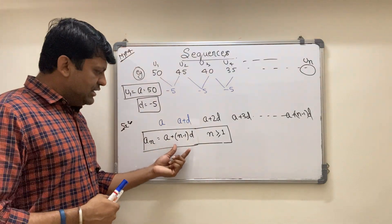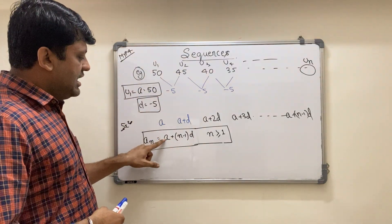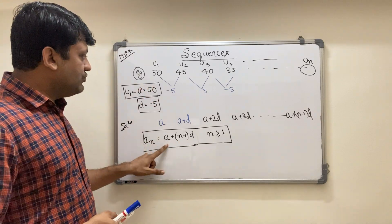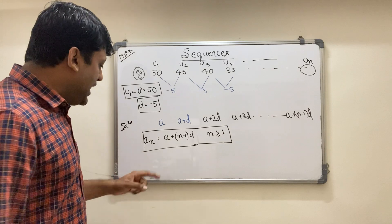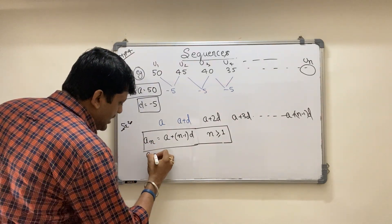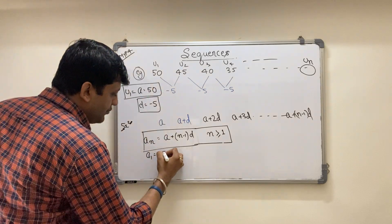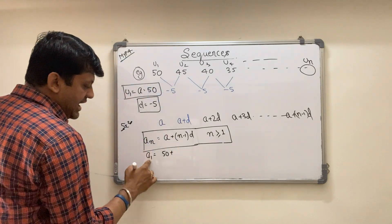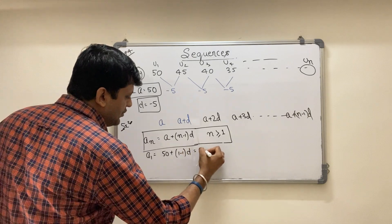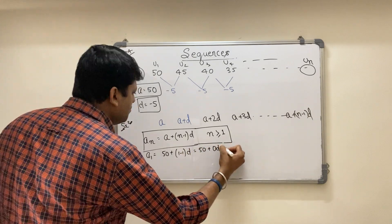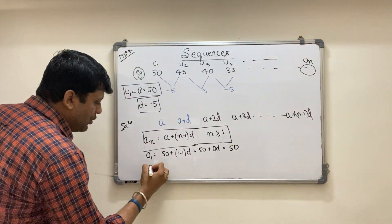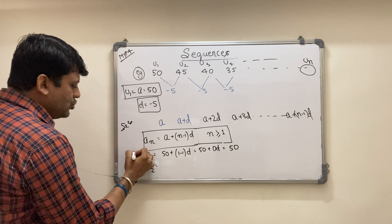Let's verify the formula with our sequence 50, 45, 40... Put a = 50 and d = minus 5. For n = 1: A(1) = 50 + (1−1)·(−5) = 50 + 0 = 50. Correct. For n = 2: A(2) = 50 + (2−1)·(−5) = 50 + 1·(−5) = 50 − 5 = 45. Correct. For n = 3: A(3) = 50 + (3−1)·(−5) = 50 + 2·(−5) = 50 − 10 = 40. The same sequence appears as expected.